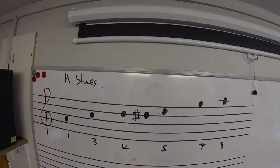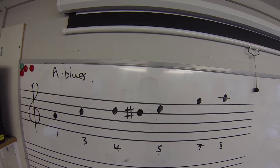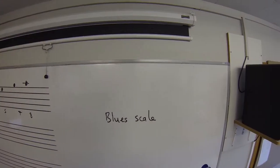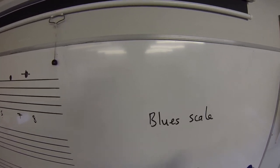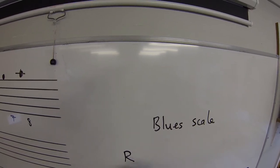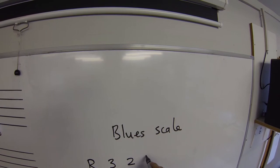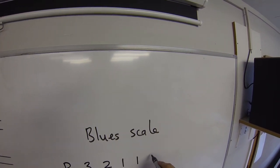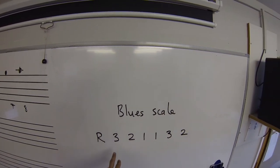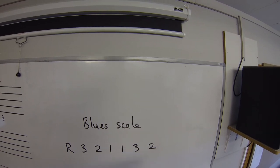But sonically-wise, absolutely no different. Call it a sharp 4, call it a flat 5, but either way you've made a blues scale. And by the way, if you like your number patterns, you can learn the blues scale as: root, 3, 2, 1, 1, 3, 2. Root, 3, 2, 1, 1, 3, 2.